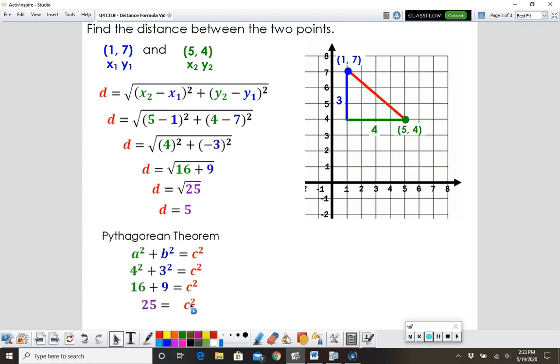16 plus 9, so we get 25 equals c squared. We'll take the square root of both sides, and that's 5.